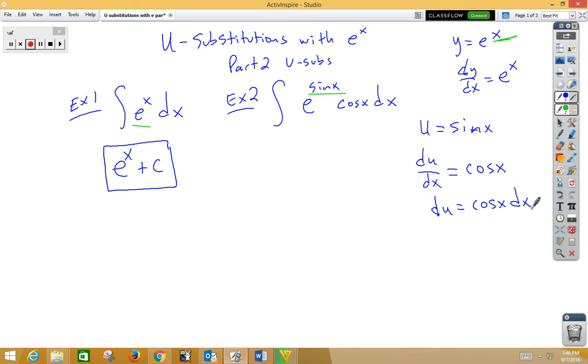Now notice, cosine x dx, I have that. So that becomes du. E to the sine x becomes e to the u. And when we integrate, we get e to the u plus c. But it's not really u. Remember, u was sin. So we get e to the sine x plus c.